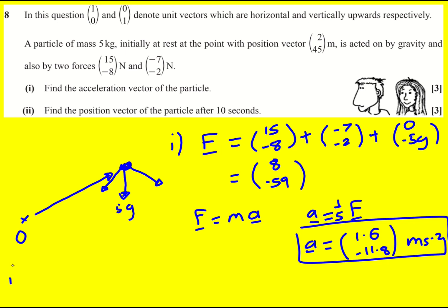Now find the position vector of the particle after 10 seconds. So we've got constant acceleration here, it's not depending on time, which means that we can apply SUVAT but in vector form.